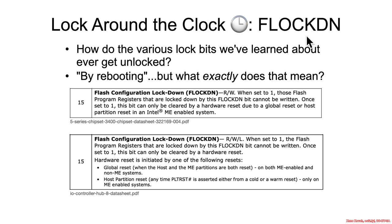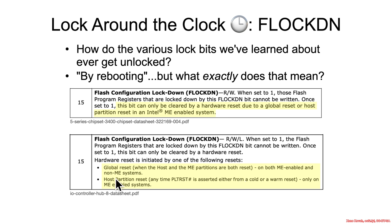So when does that get reset? According to the documentation on the 5-series, this bit can only be cleared by a hardware reset due to a global reset or a host partition reset in an Intel ME-enabled system. On the 8-series IO controller hub, it says it's reset following a global reset when the host and ME partitions are both reset, or a host partition reset, which is any time platform reset is asserted either from a cold or a warm reset.